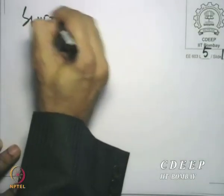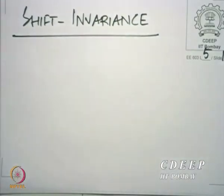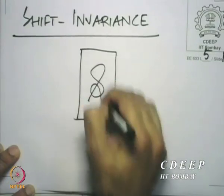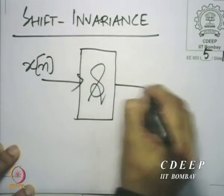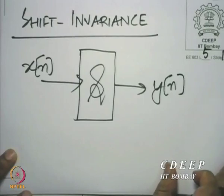The second property is equally interesting, and that is the property of shift invariance. To test a system for shift invariance, we need to perform only two experiments. We first apply to the system an input x[n] and study the output y[n]. And then we take the very same system S and apply to it the input x[n − n0], where n0 is an integer constant.